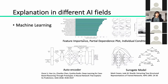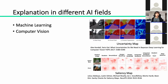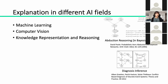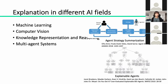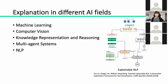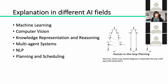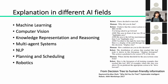It's important to say that explanation in the last years is becoming ubiquitous in many different fields of AI, starting from machine learning which is the main topic of this presentation, but there is also a strong component in computer vision, knowledge representation and reasoning, multi-agent systems, natural language processing, planning and scheduling, and robotics.